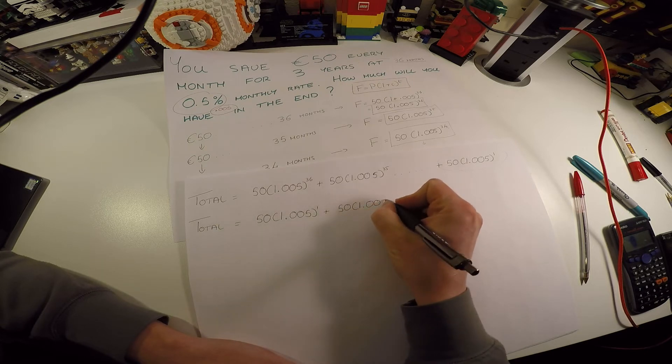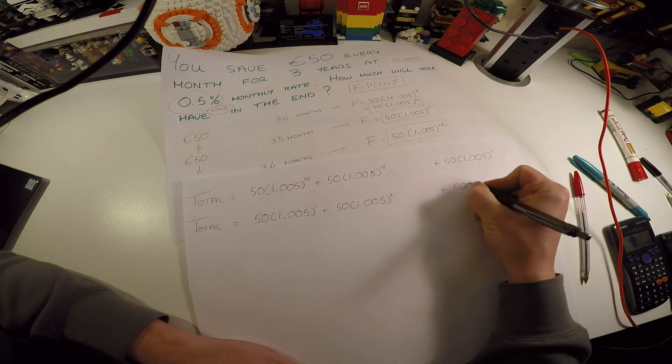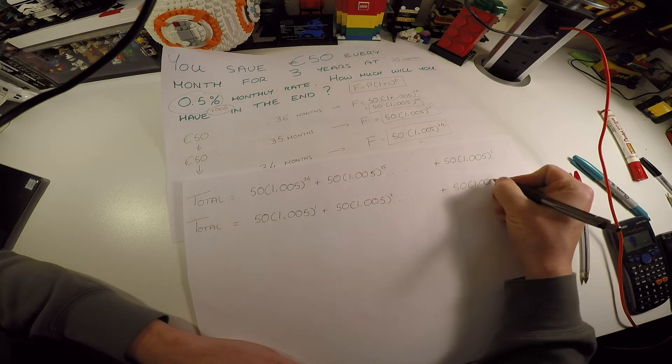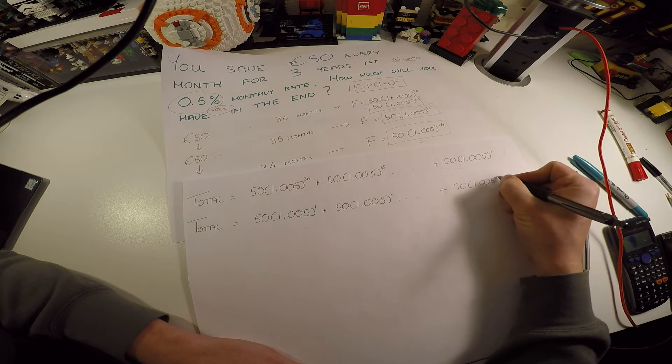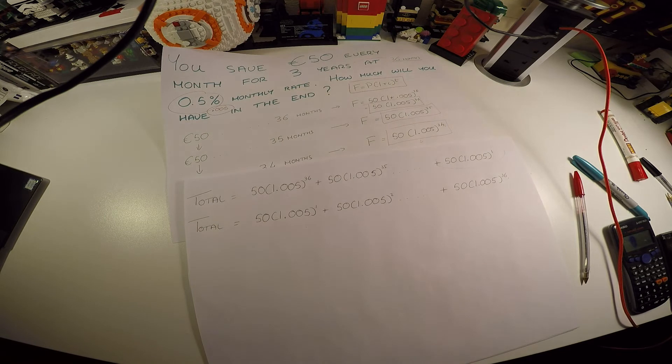So I'm going to write this one first, changing absolutely nothing except the order in which I write them. The next one, and so on all the way to the first payment. So I'm effectively writing it backwards if you like. I have all these 36 payments, all earn interest for a different amount of time.